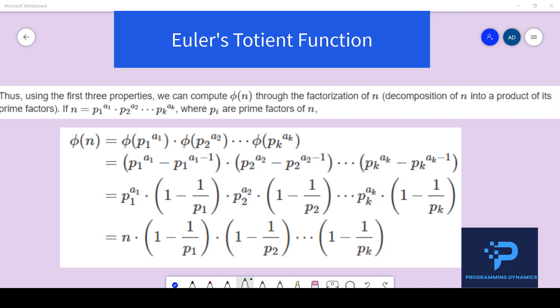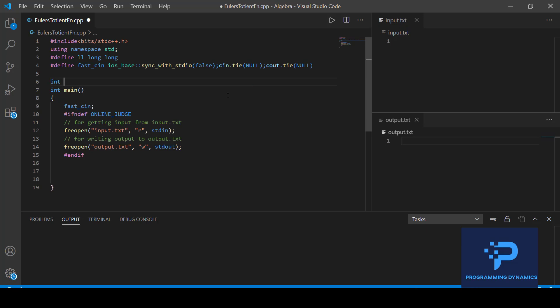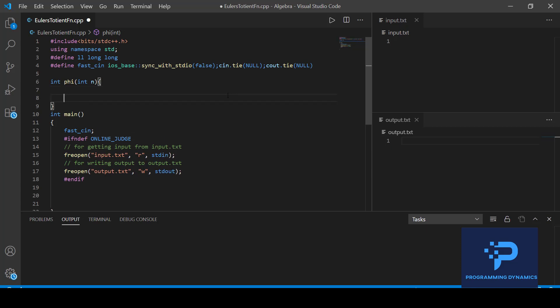So let's start coding the Euler's totient function. The function which will compute the value of phi and name it as phi and it takes an argument which is integer n and it will give the count of the number of integers between 1 and n inclusive which are co-prime with n which is exactly the Euler's quotient function. So let me just store the result in the variable and initialize it with n.